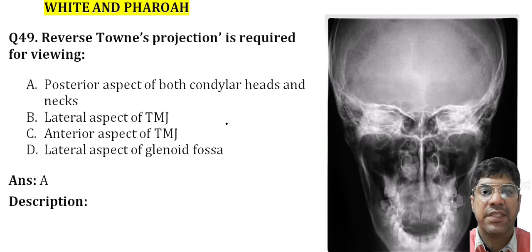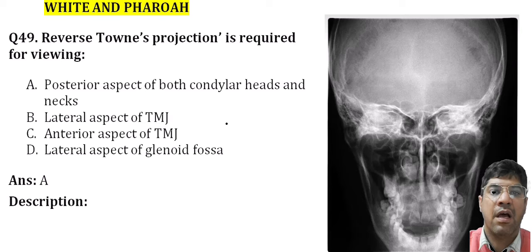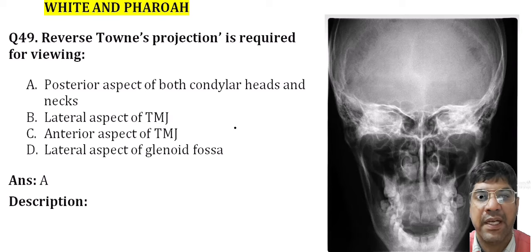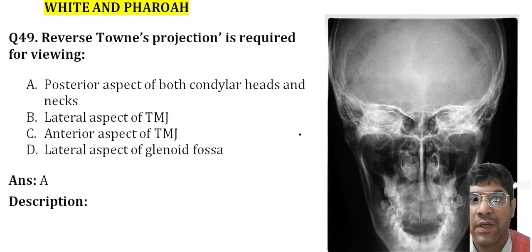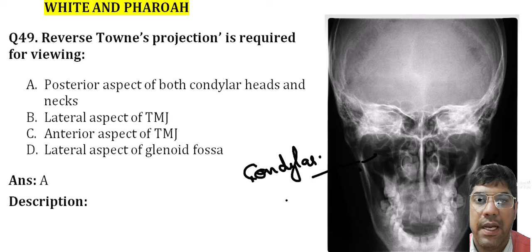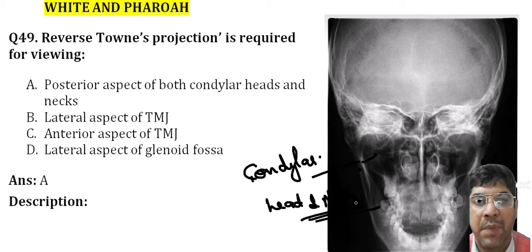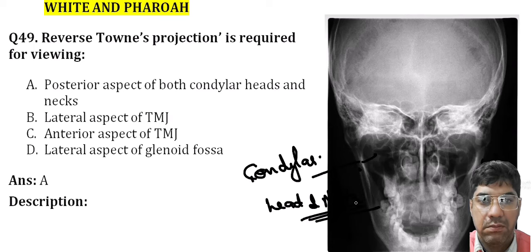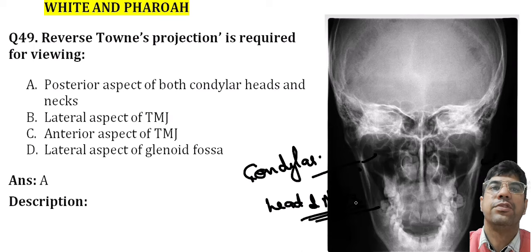The next question: the reverse Towne projection is required for viewing the posterior aspect of the condylar heads and the neck — the condylar head and neck of the TMJ. It is used to identify high fractures of the condylar head/neck, condylar hypo- or hyperplasia, or intracapsular fractures of the TMJ. The answer would be A.